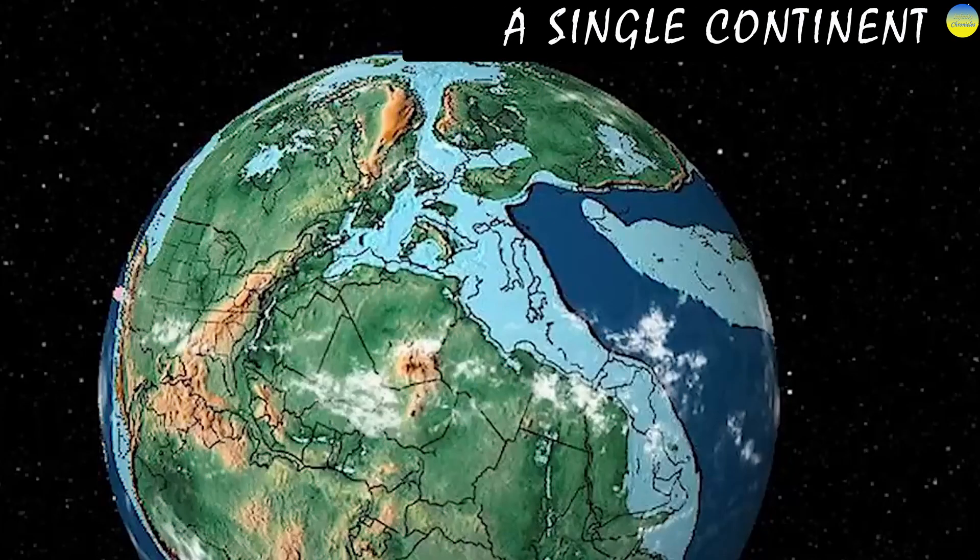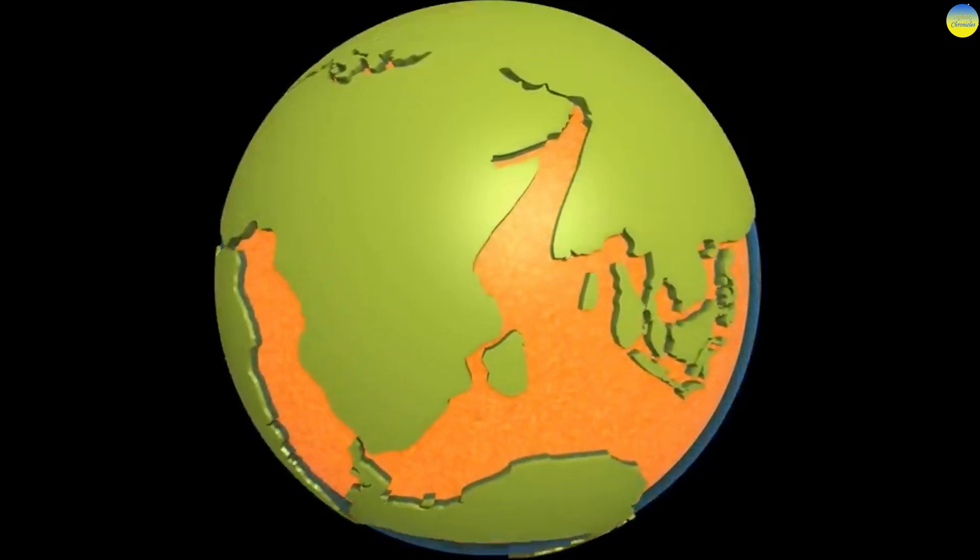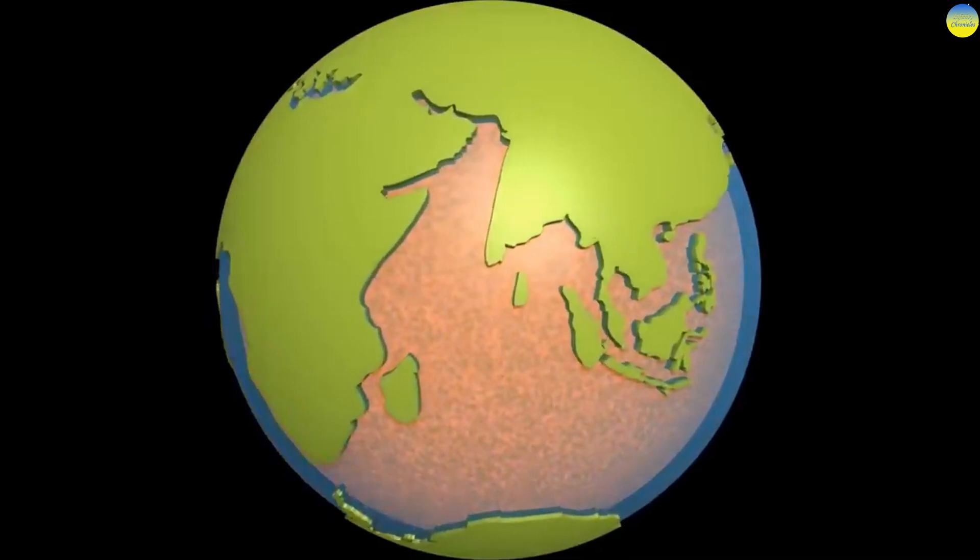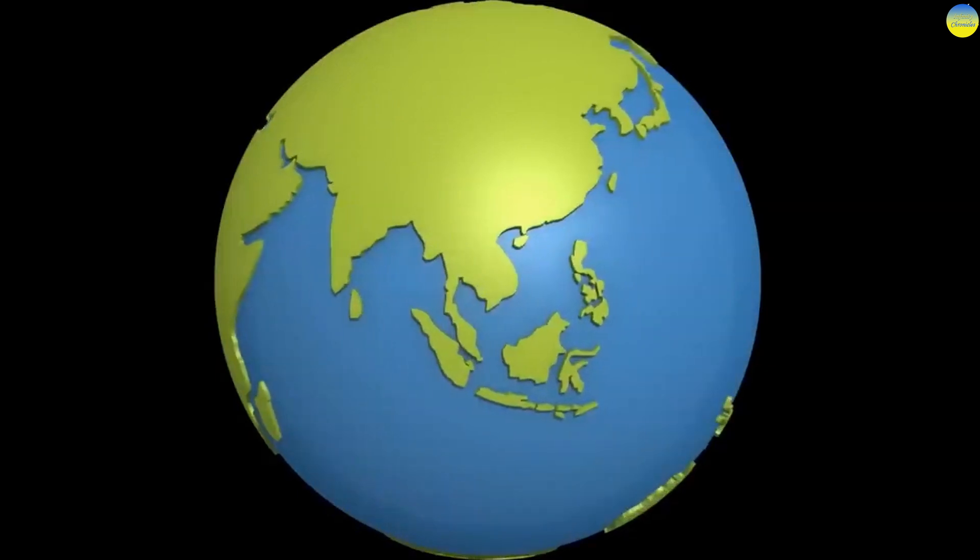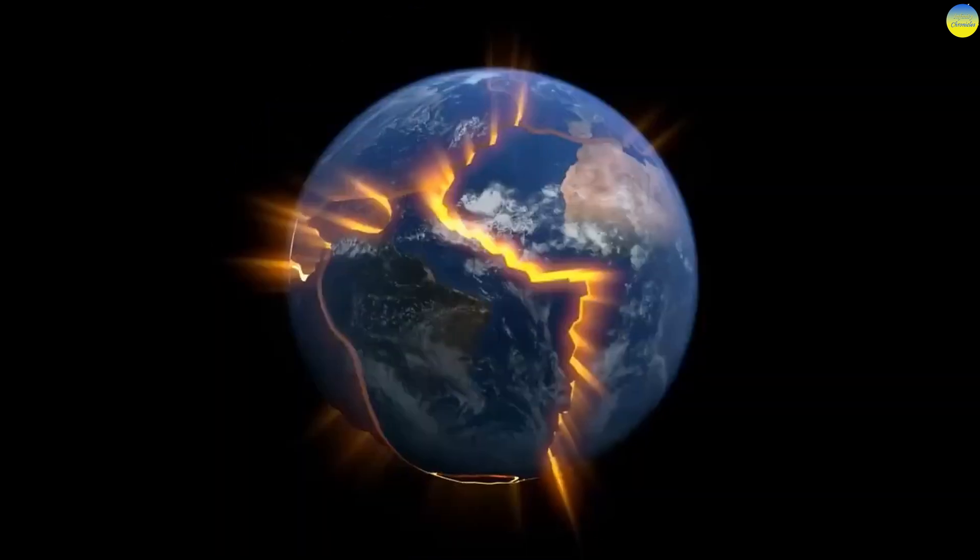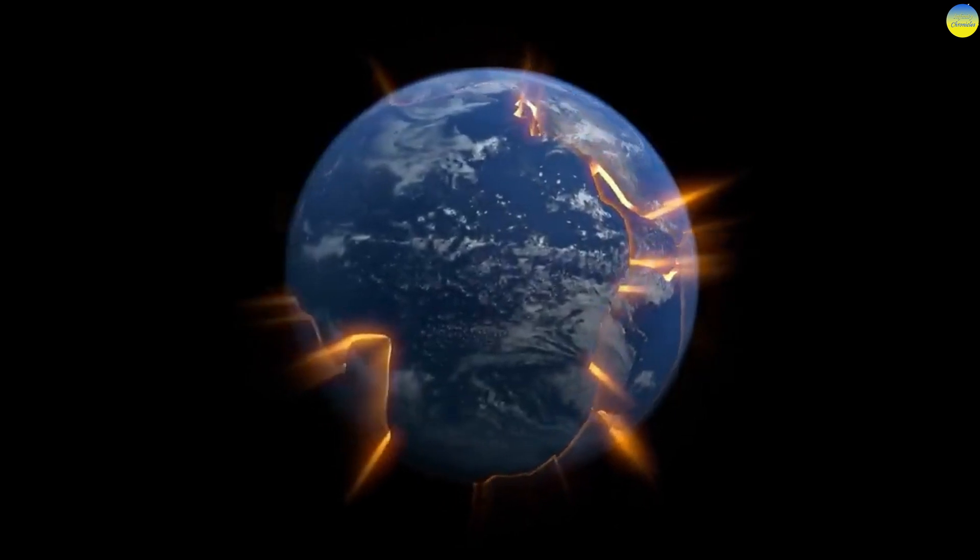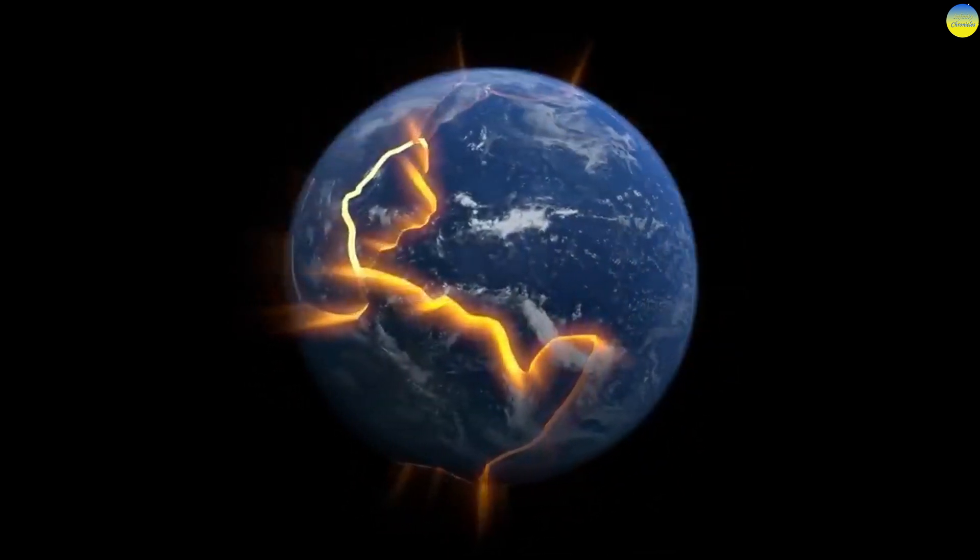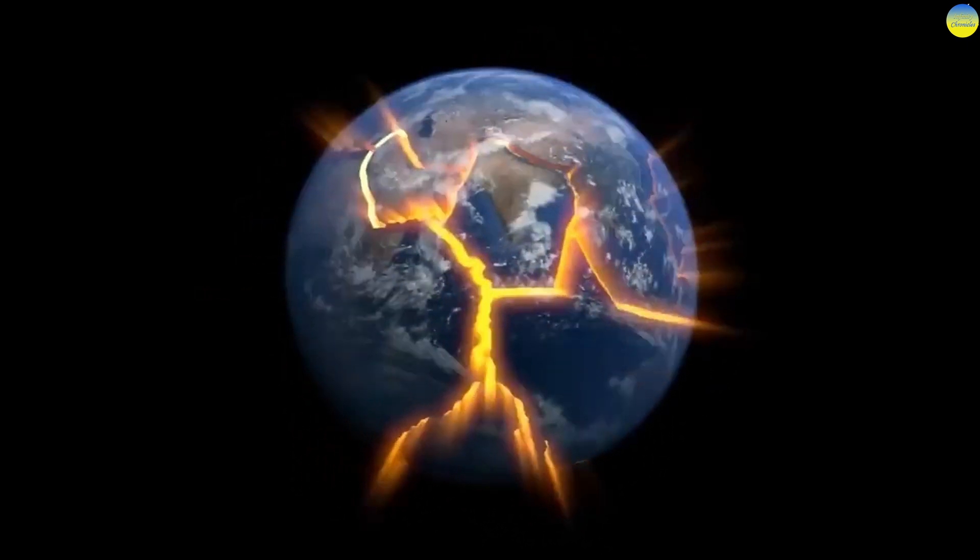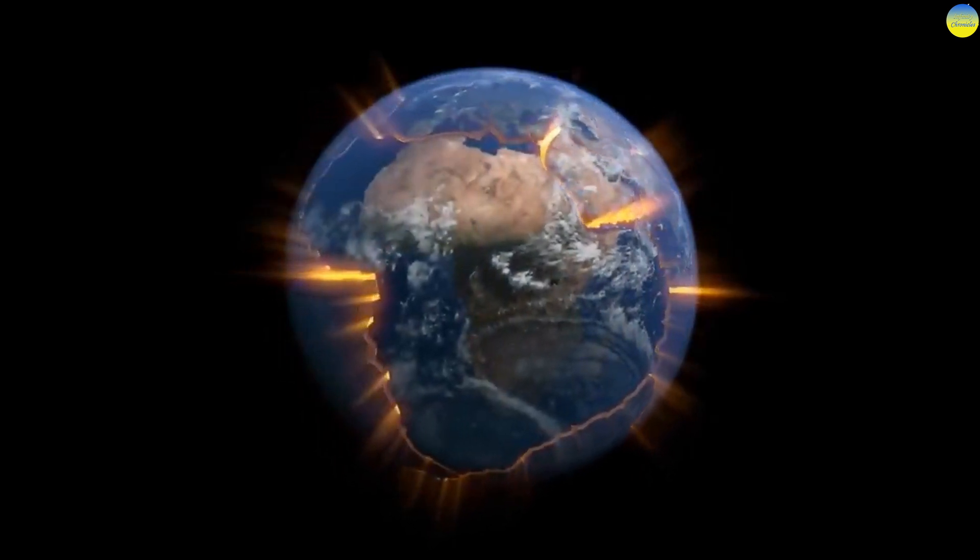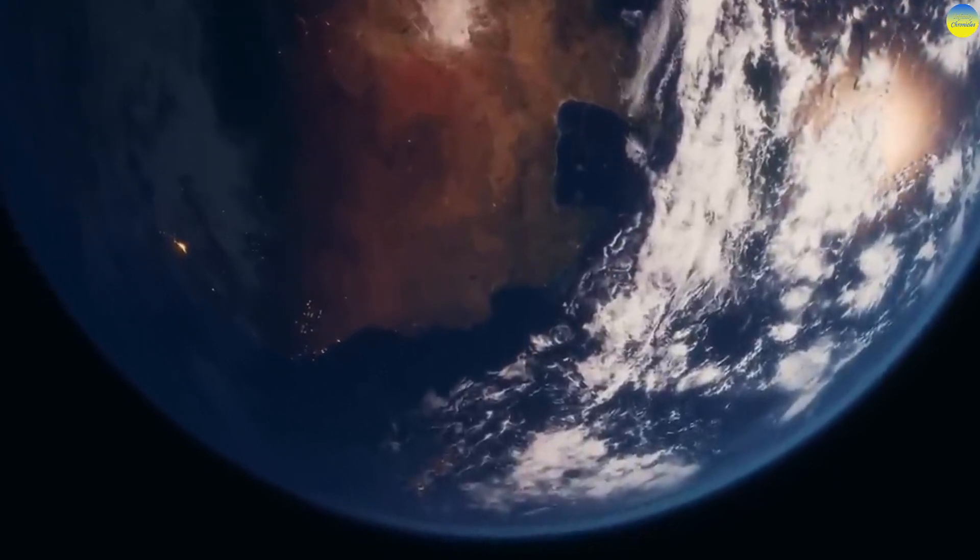A single continent. Supercontinent Pangaea. About 200 million years ago, all continents were joined into a giant supercontinent known as Pangaea. Subsequently, this supercontinent broke up into six continents and five oceans. We know that they were together not only because the continents fit together like a puzzle, but also because scientists found the same types of rocks on the west coast of Africa and the east coast of South America. This means that they must have formed when the continents were together.